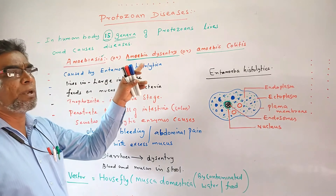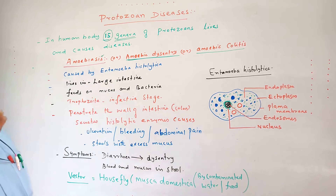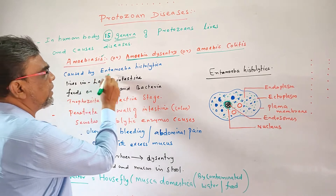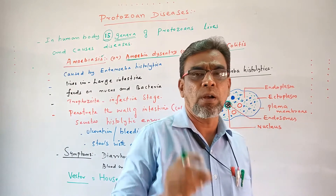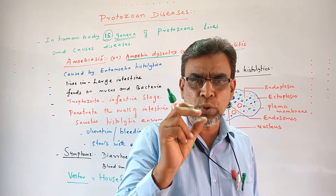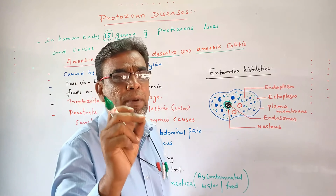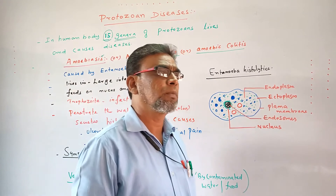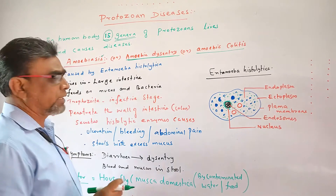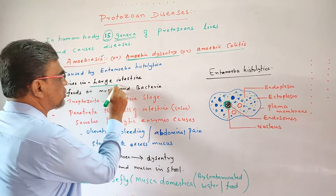This amebiosis is a disease caused by a protozoan. The name is Entamoeba histolytica. Entamoeba histolytica is the species name of the protozoan which causes amebiosis.